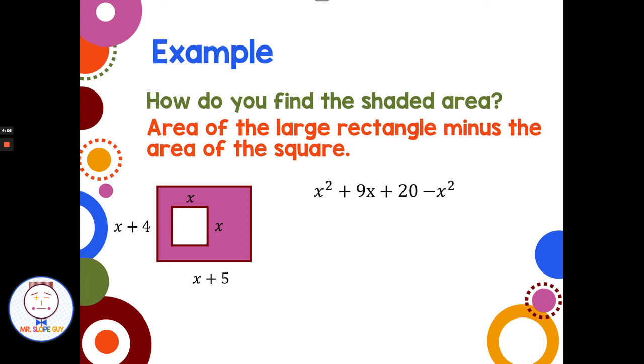So now I just have some like terms. What happens when I combine 1x squared and negative x squared? They're opposite coefficients. Positive 1x squared and negative 1x squared cancel out and leave me with 9x plus 20. So 9x plus 20 would describe the shaded area in pink.